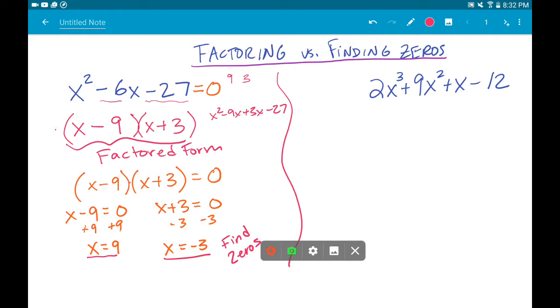But the factored form, which we use to find the zeros, is written in parentheses. And so again, you're probably sick of it by now, but this is factored form up here, and this is like the solved version to find the zeros.